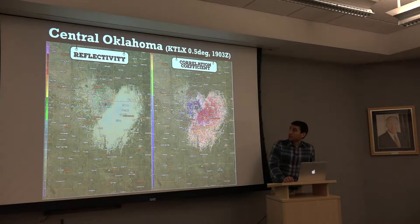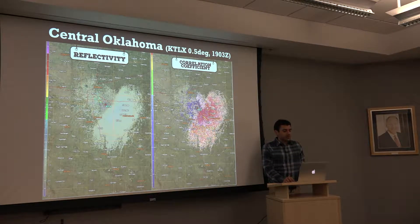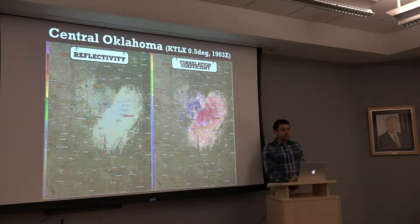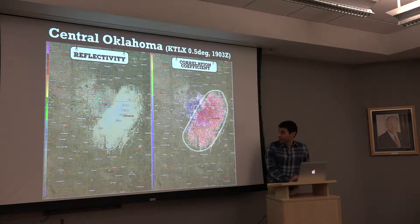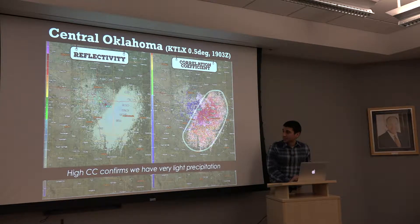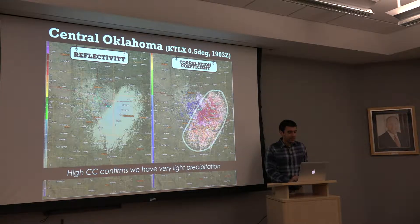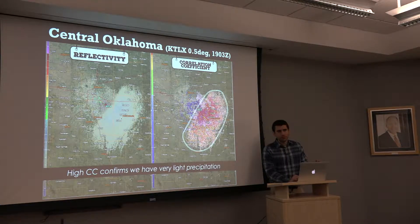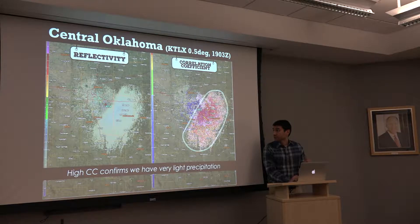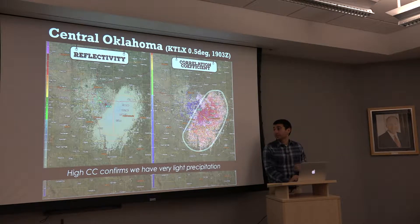This is a recent example from central Oklahoma. On the left we have reflectivity and on the right we have correlation coefficient. We highlight correlation coefficient because with reflectivity this light — we're talking 0 to 5 dBZ, even negative dBZ — it's really light precipitation. We want to make sure we're dealing with meteorological scatterers. Correlation coefficient is nice and high, so we feel good that it's a meteorological scatterer and it confirms we have very light precipitation.